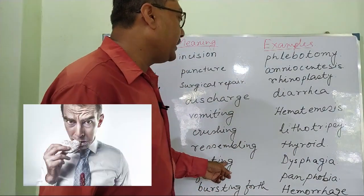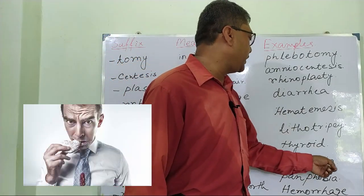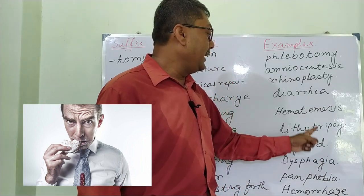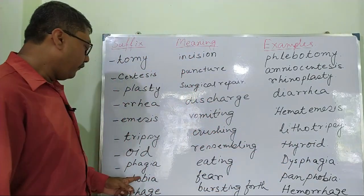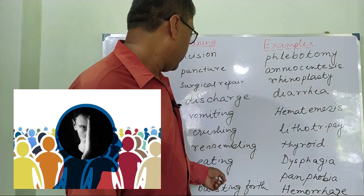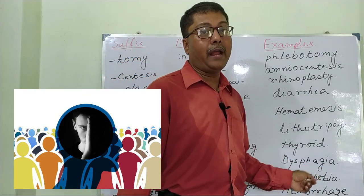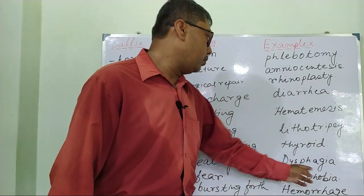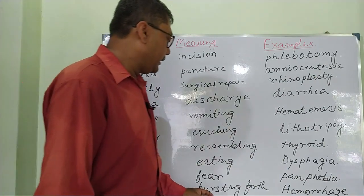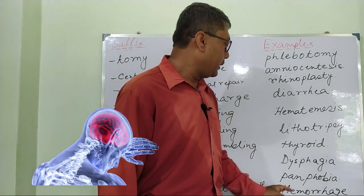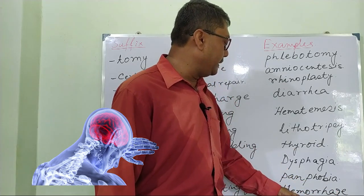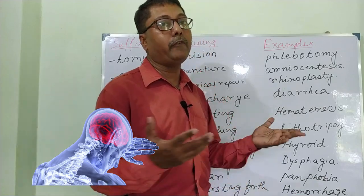'-phagia' means eating or swallowing — example: dysphagia, where 'dys-' means painful, so painful or difficult swallowing. '-phobia' means fear, or more precisely irrational fear — example: panphobia, where 'pan-' means all, so fear of everything. '-rrhage' means bursting forth — example: hemorrhage, where 'hemo' means blood, so hemorrhage is the bursting forth of blood.